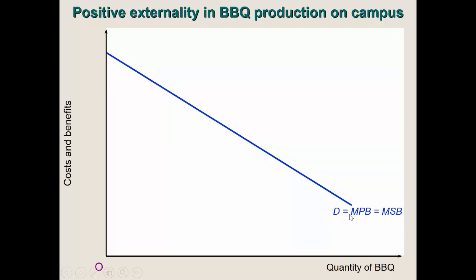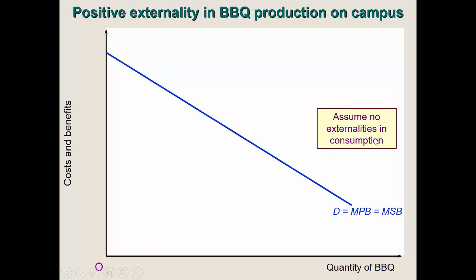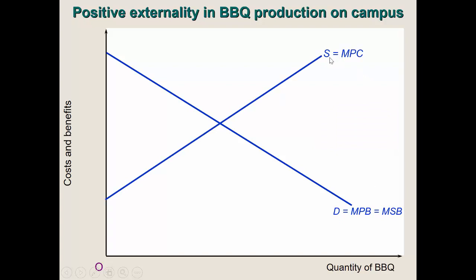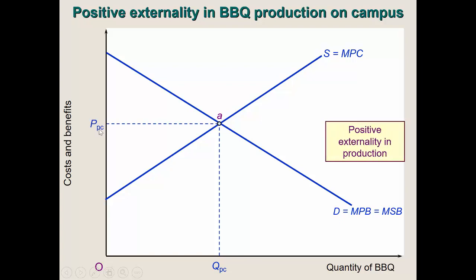There are no external benefits or costs in consumption, so demand equals marginal private benefit equals marginal social benefit — assume no external consumption effects. But in production we have external benefits, so we are internalizing the MPC only — the actual cost of making the barbecue — and still not taking into account the external benefits. As a result, the market equilibrium is at Ppc and Qpc as usual. Recall the chemical company example of giving fertilizer waste to farmers — that's a positive externality in production — we should really produce more to make that benefit available.